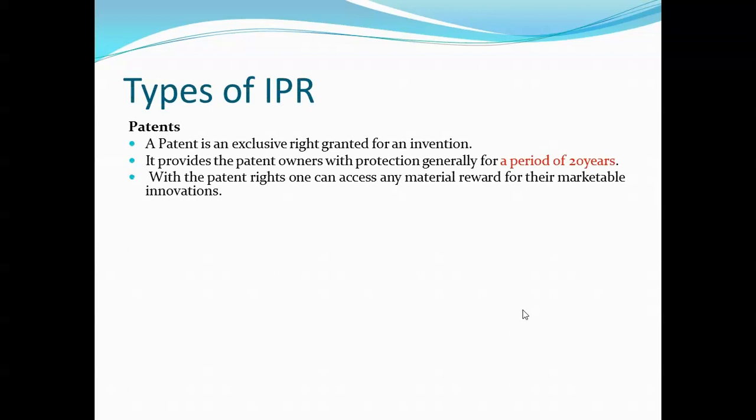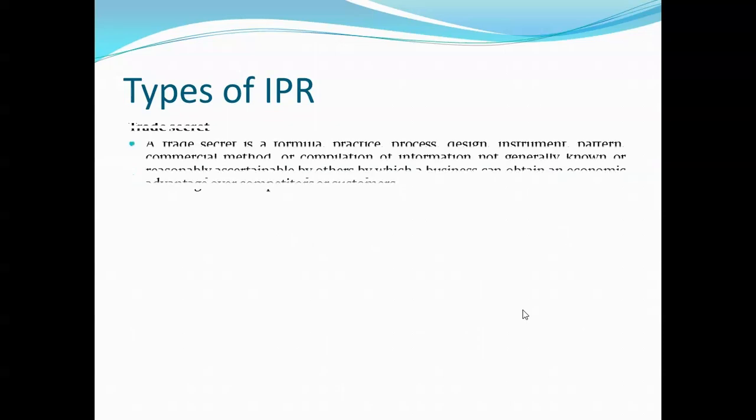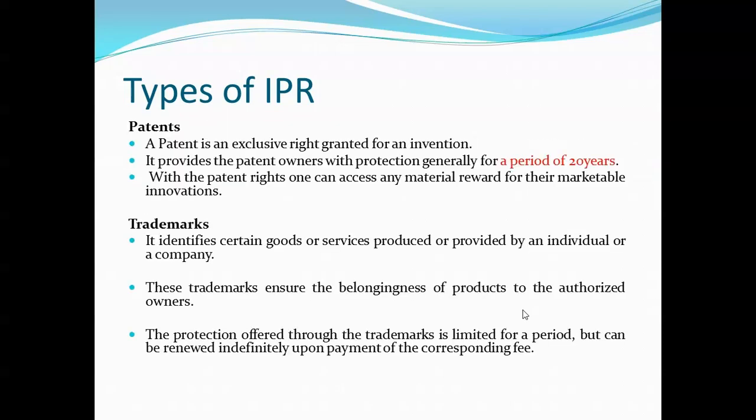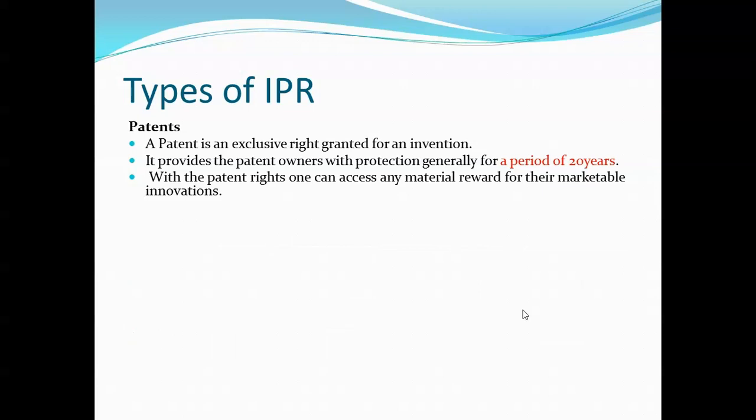Types of IPR: we have different types of intellectual property rights — patents, trademarks, trade secrets, and copyright. A patent is an exclusive right granted for an invention. If you have a good inventive idea and want to file a patent for it, you can apply to the Indian Patent Office. It provides patent owners with protection generally for a period of 20 years.